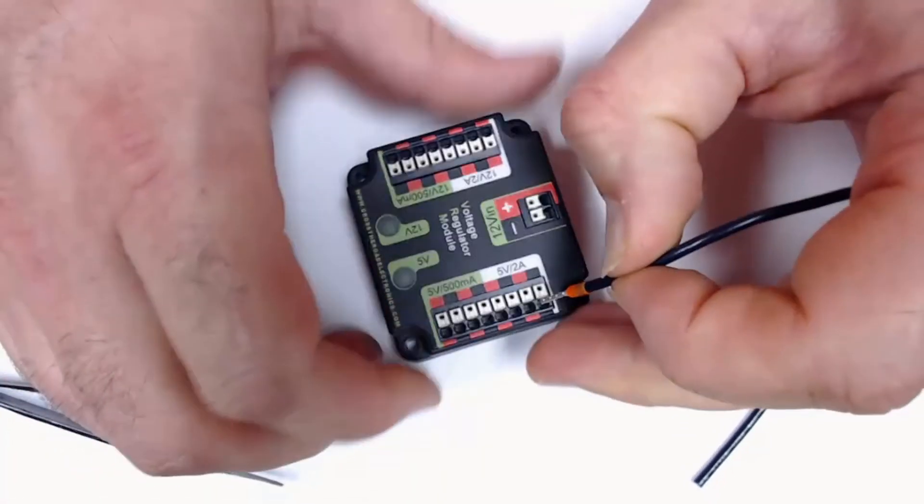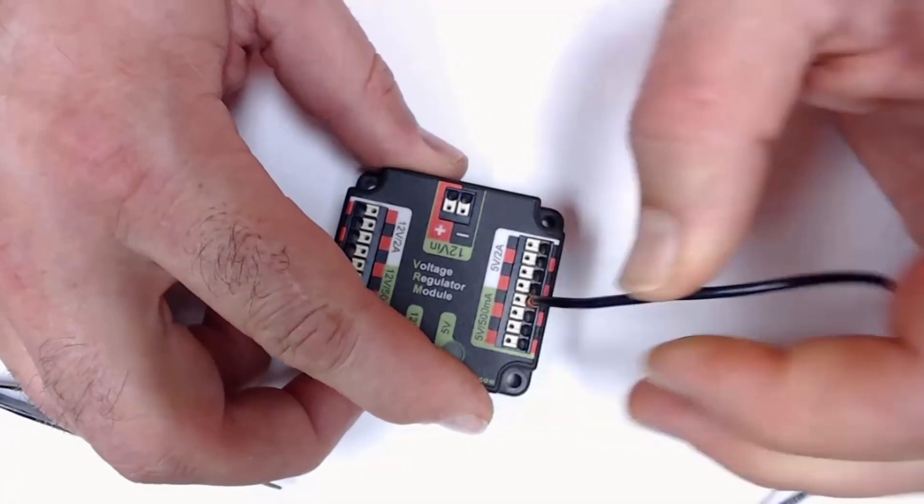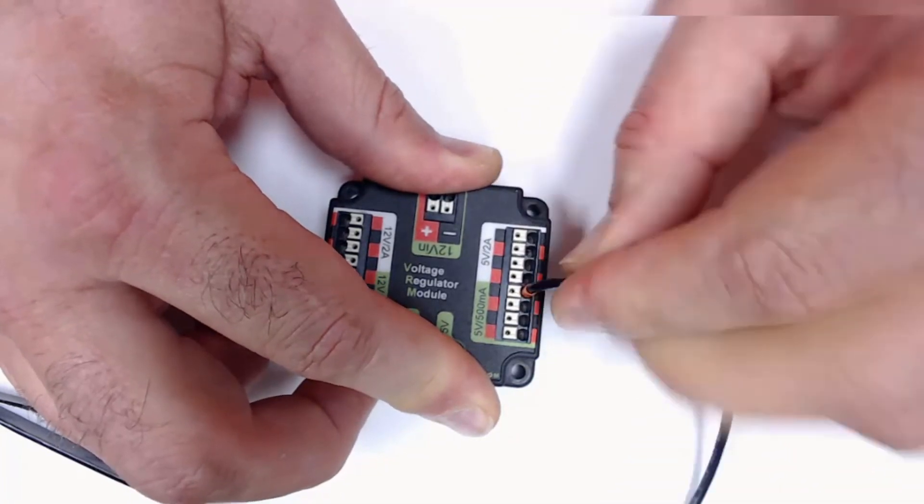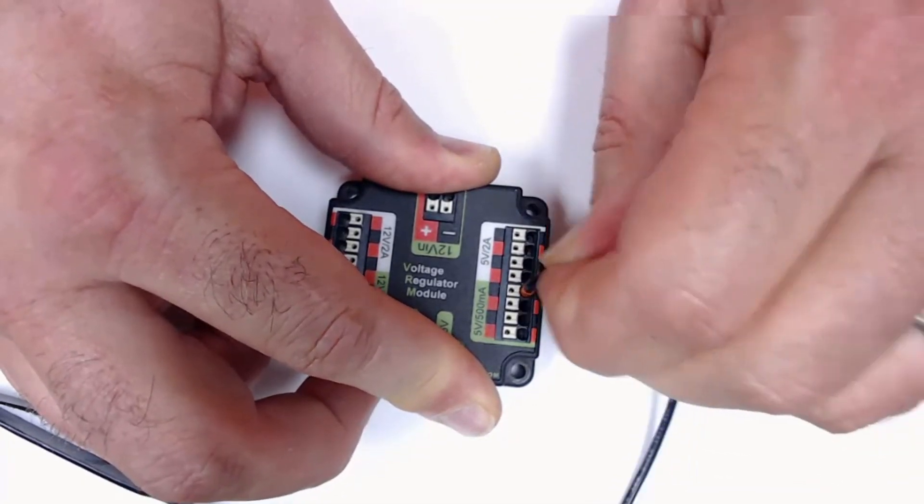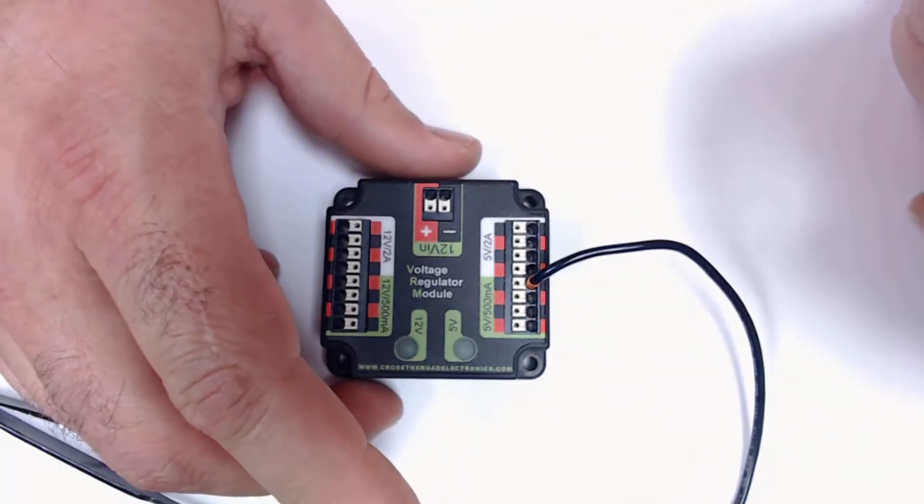A little pull test. We're going to insert it into one of the VRM outputs. We're going to give it a good tug, and we want to make sure that that wire does not come out. That is really important that that wire does not come out. Looks good to me. I think we're all set.